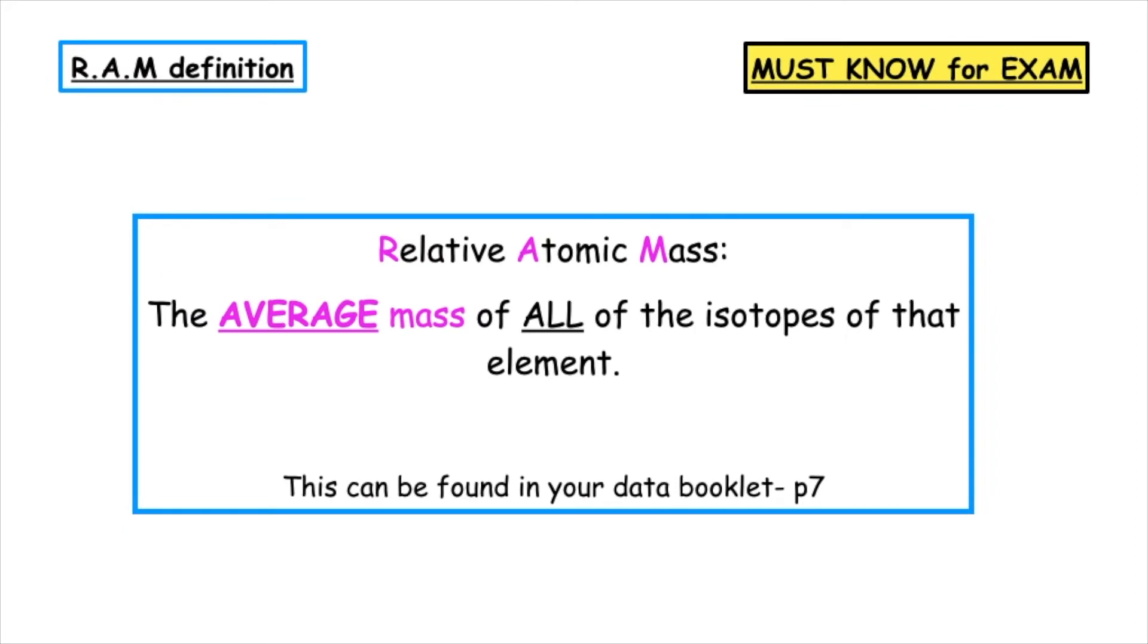The relative atomic mass is the average mass of all of the isotopes of that element. This can be found on page 7 of your data booklet.